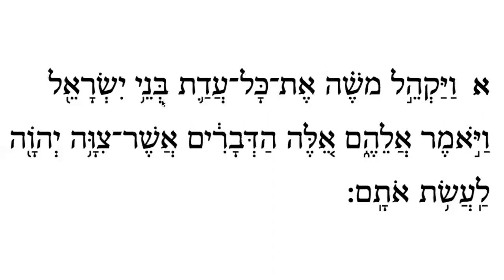A bet with a shiva says 'bih,' and a nun with a tzere and yud together say 'neh' — so 'b'nei,' meaning 'sons of' or 'children of.' Then a yud with a chirik gives 'yeh,' a sin makes 'yis,' a reish with kamatz is 'ra,' and an aleph with a segol and lamed gives 'el' — 'Yisrael,' Israel in English. Full sentence: 'Vayakhel Moshe et kol adat b'nei Yisrael' — 'And Moshe assembled the whole congregation of the sons of Israel.'